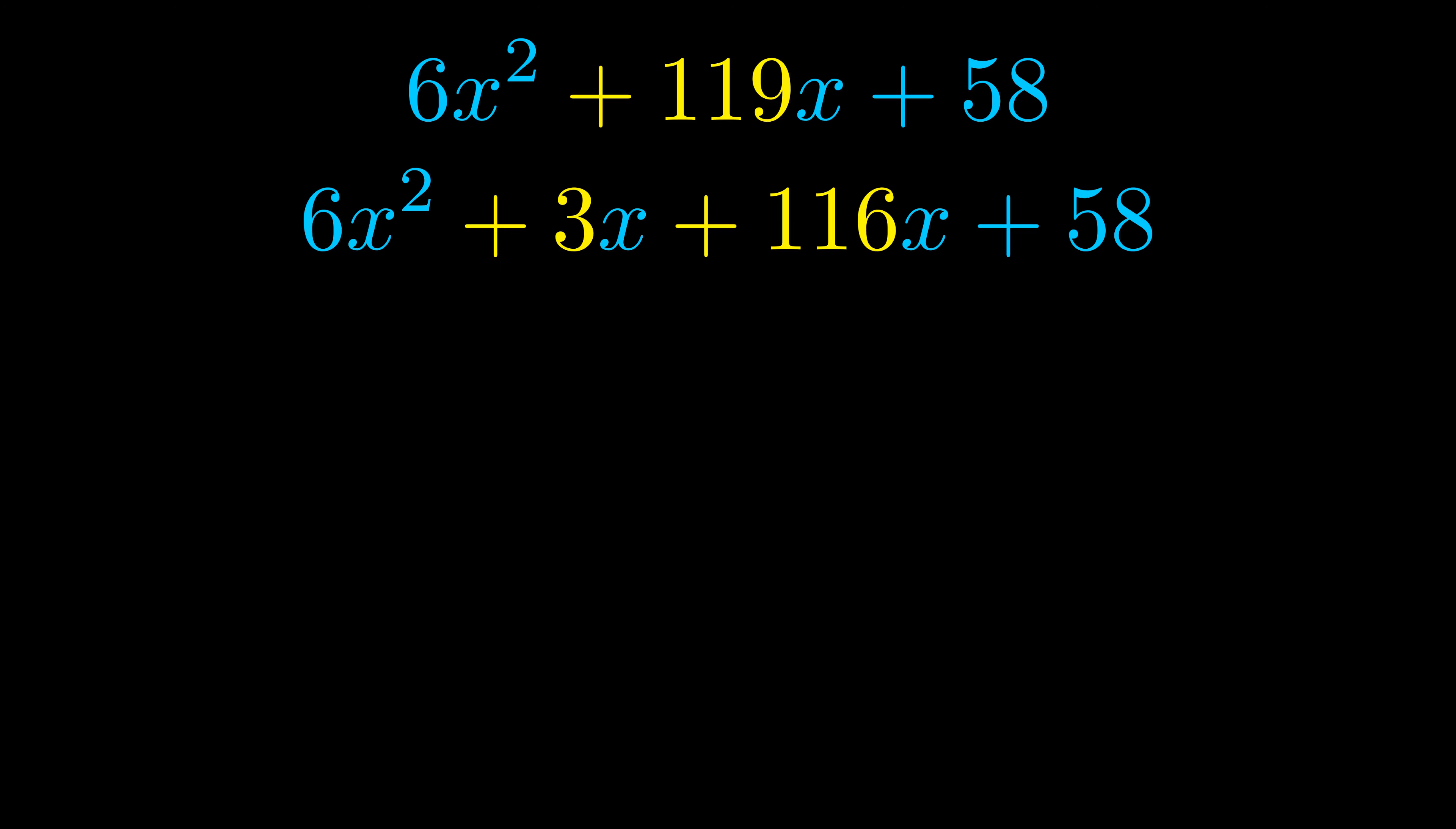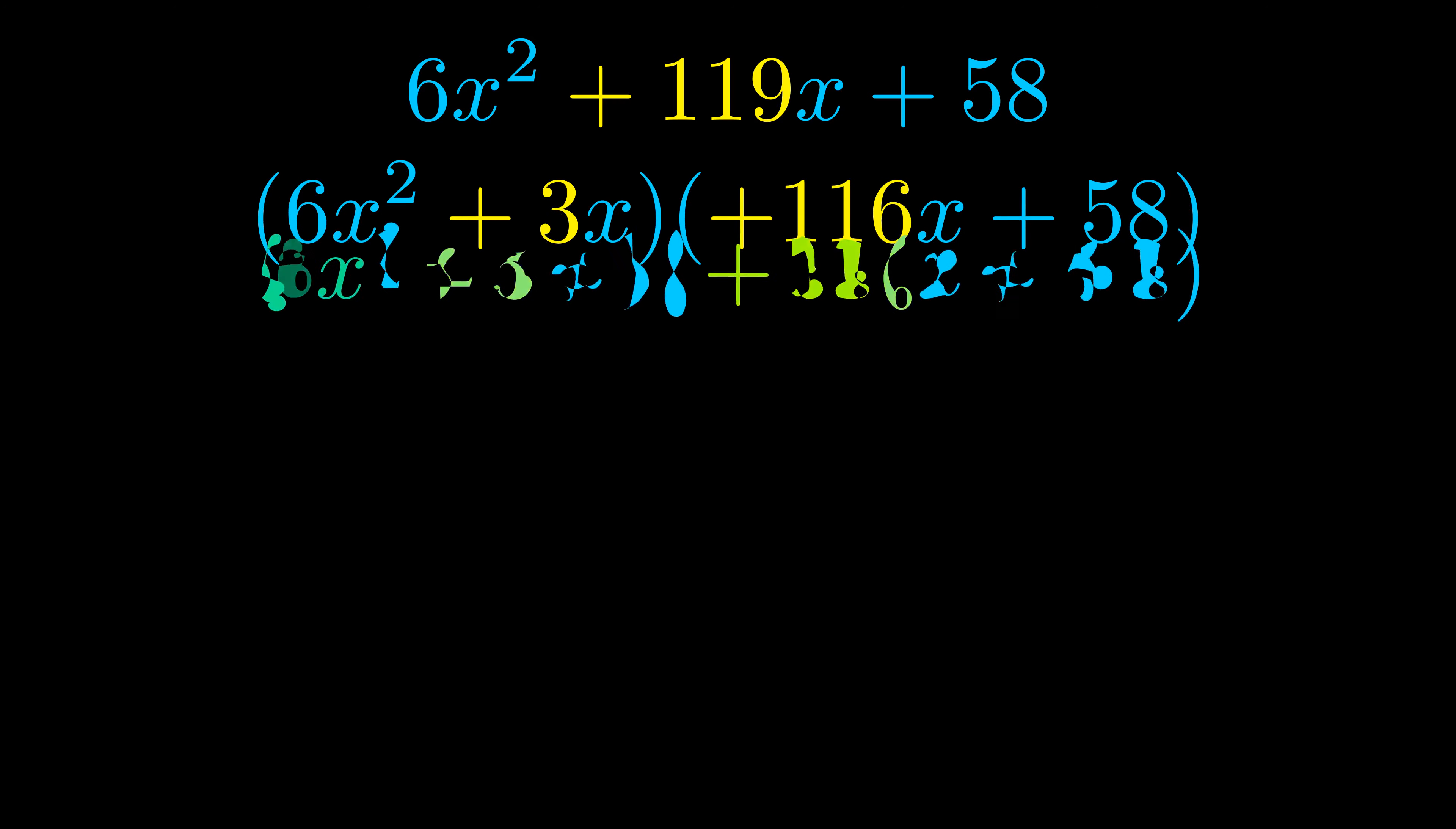Once we've done this, we put parentheses around the first term and the last term so that we can take the greatest common factor out of both terms. The greatest common factor is now outside in green. Notice also how what remains inside the parentheses is the same in both cases. The blue values are the same.